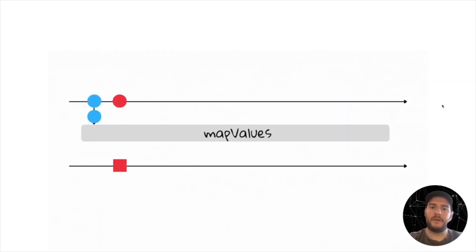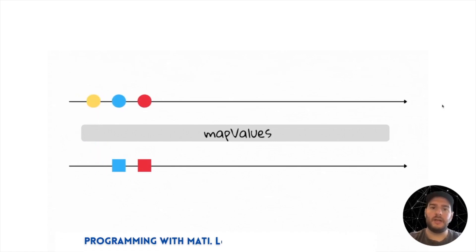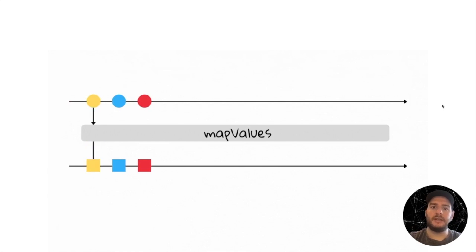It's very similar to map, but it won't allow us to change the key. We can read it and we can use it in our transformation, but we cannot change it. This avoids repartitioning, and it's very useful to optimize our Kafka Streams application.